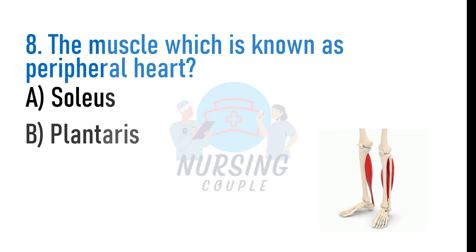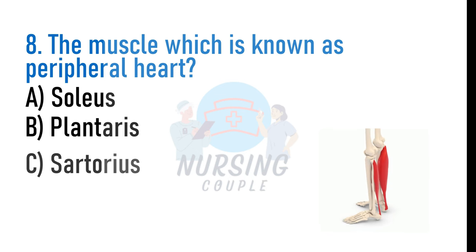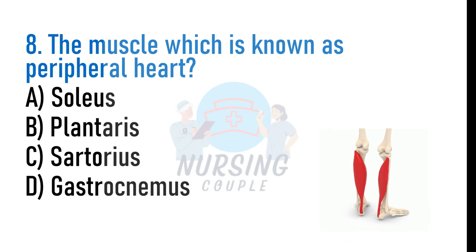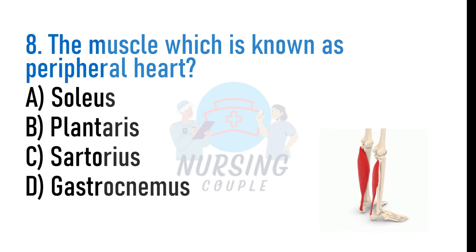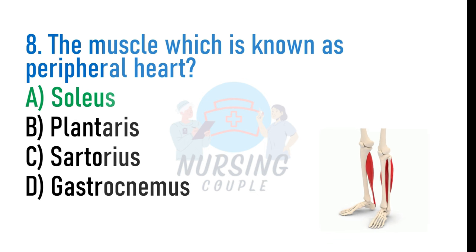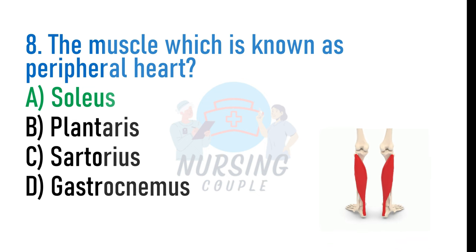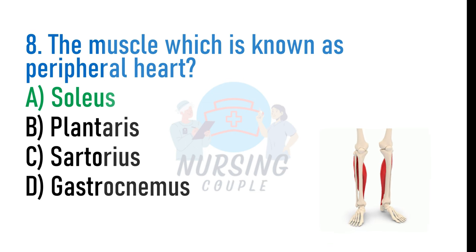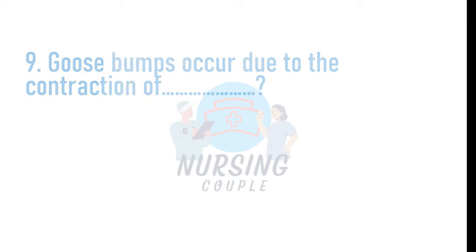The muscle known as the peripheral heart is: A. Soleus, B. Plantaris, C. Sartorius, D. Gastrocnemius. The answer is Option A: Soleus. The soleus muscle helps pump blood present in the veins of the legs back into the heart, and for this reason it is named the peripheral heart.